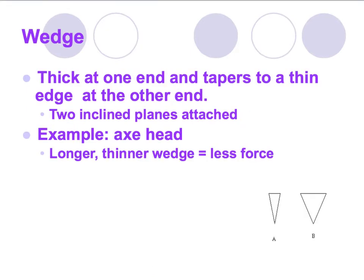The next type is a wedge, which is basically two inclined planes attached back to back. A wedge is thick at one end and tapers to a thin edge at the other. Examples include an axe head, a knife, or scissors — things that are sharp and have a point. The longer and thinner the wedge, the less force is required. Between wedge A and B, wedge A would require less force.